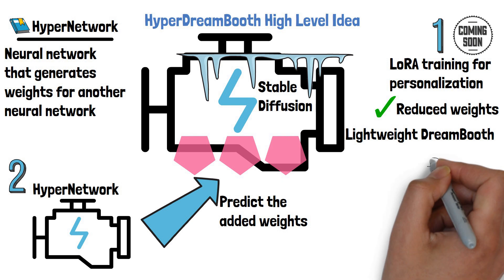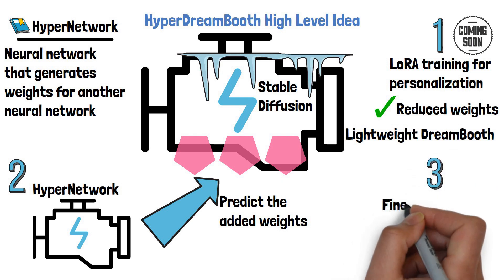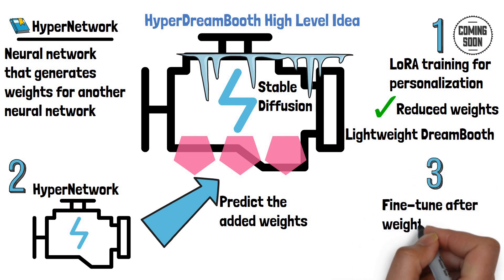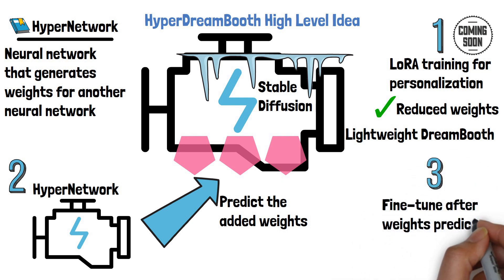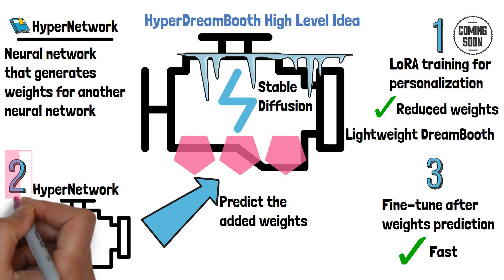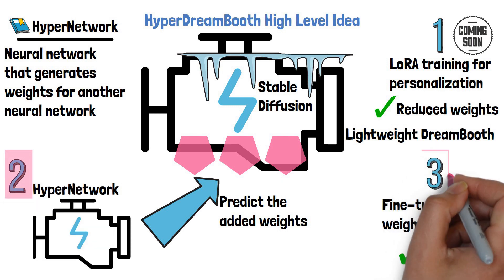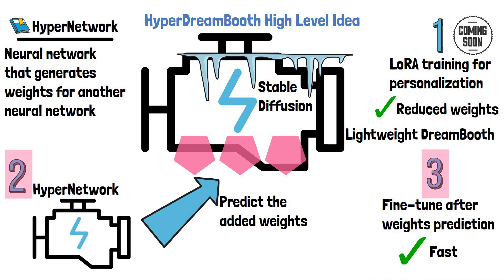The third and last step is another fine-tuning after the weights prediction, which is fast since the predicted weights are already in the right direction. Since you don't need to go through step 1 in most cases, but only via steps 2 and 3, creating a new personalized model is super fast.